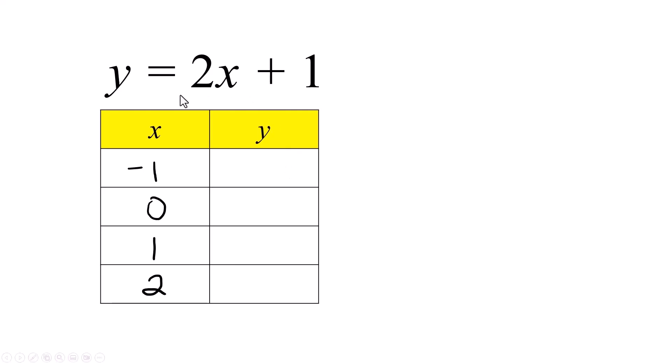The y's are going to come from the answers we get when we put these x's in here. So negative 1 times 2 is negative 2. Do the math in your head with me. Negative 2 plus 1 is negative 1. Zero. Oh, that's easy. Zero times 2 is 0, plus 1 is 1.